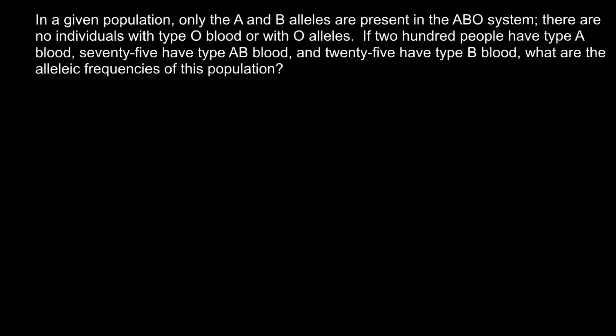First of all, I want to remind you what kind of genotypes make these blood groups. Normally the total number of blood groups is 4. Blood group A can be made by two genotypes: AA and AO. But because we don't have allele O in this example, we can cross out the AO genotype.